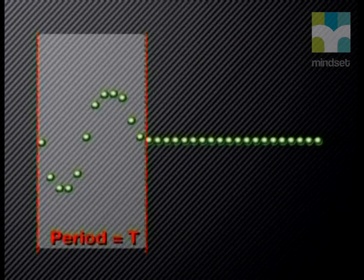Let's join Keke as she explains the term period to us. We call the time that a pulse takes to complete one vibrational cycle the period of the pulse, and represent it with the symbol T.